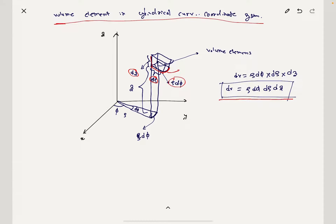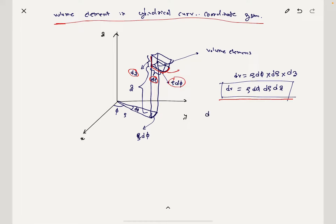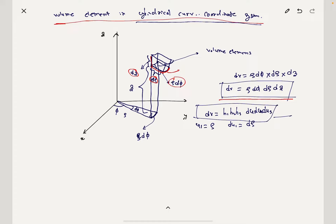Now we verify this using the curvilinear coordinate system logic. For a curvilinear coordinate system, dV = h1·h2·h3 · dU1·dU2·dU3. We know U1 = Rho, so dU1 = dRho. U2 = Phi, so dU2 = dPhi. U3 = Z, so dU3 = dZ.